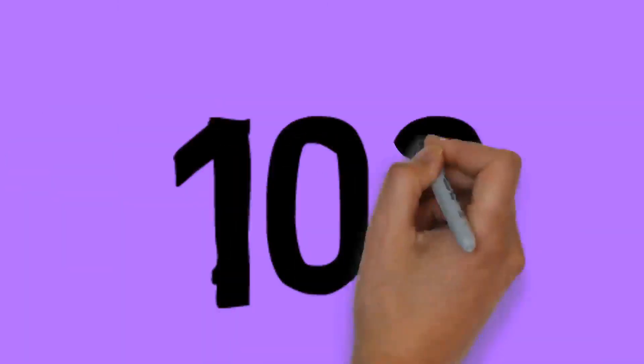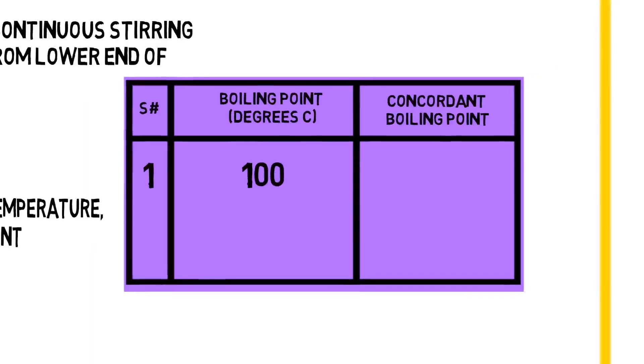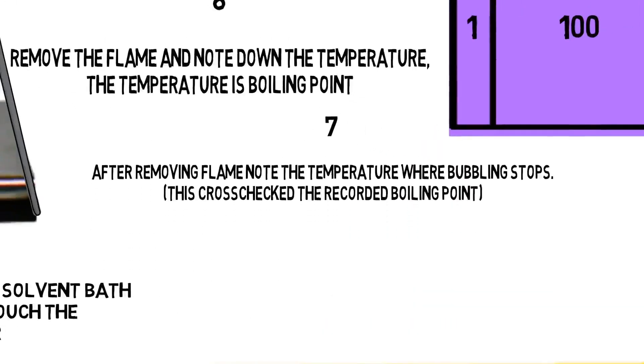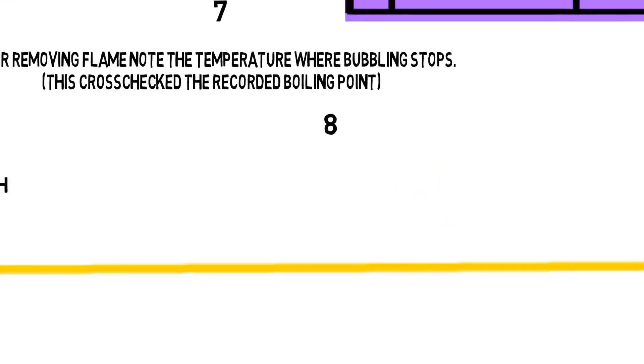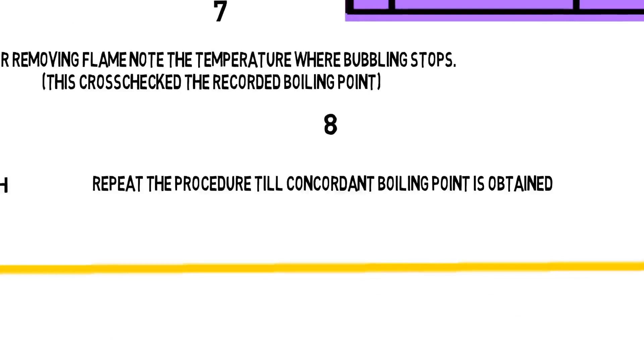Observation one: hundred degrees centigrade. After removing flame, note down the temperature where bubbling stops. This cross-checks the recorded boiling point. Repeat the procedure till concordant boiling point is obtained.